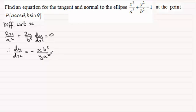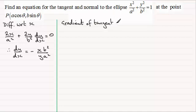And we can find the gradient of the tangent at this point just by substituting our x and y coordinates in. So if you are finding the gradient of the tangent by this method, gradient of tangent at P: Then substituting for x in here as A cos theta and y as B sine theta, you should find you get minus A B squared cosine theta, all divided by A squared B sine theta. And we can cancel this down by dividing through by A and B, and that just gives us minus B cosine theta, all divided by A sine theta. So that's our gradient of a tangent.